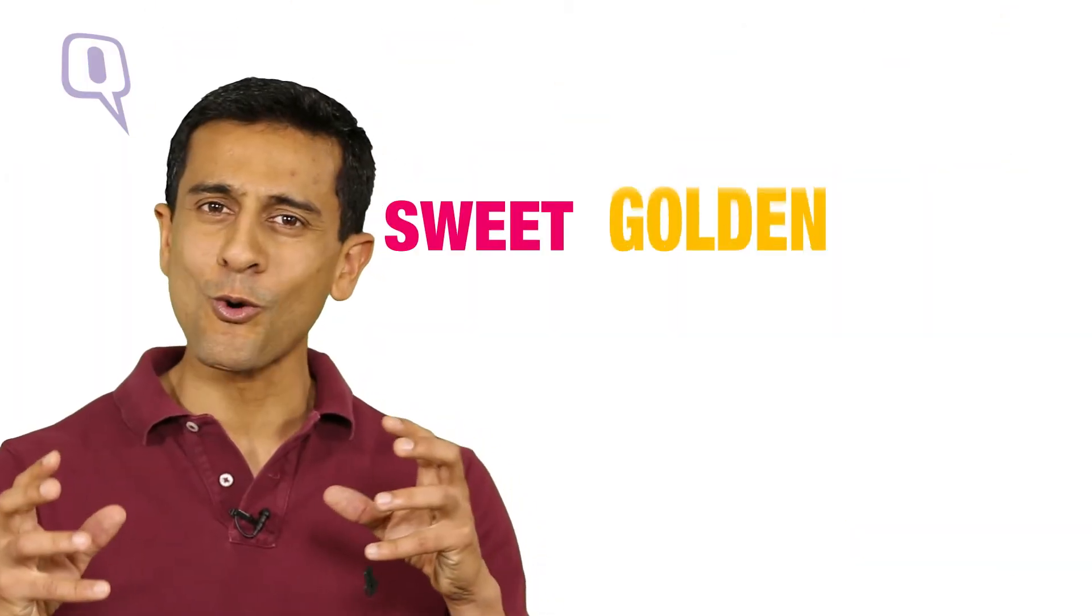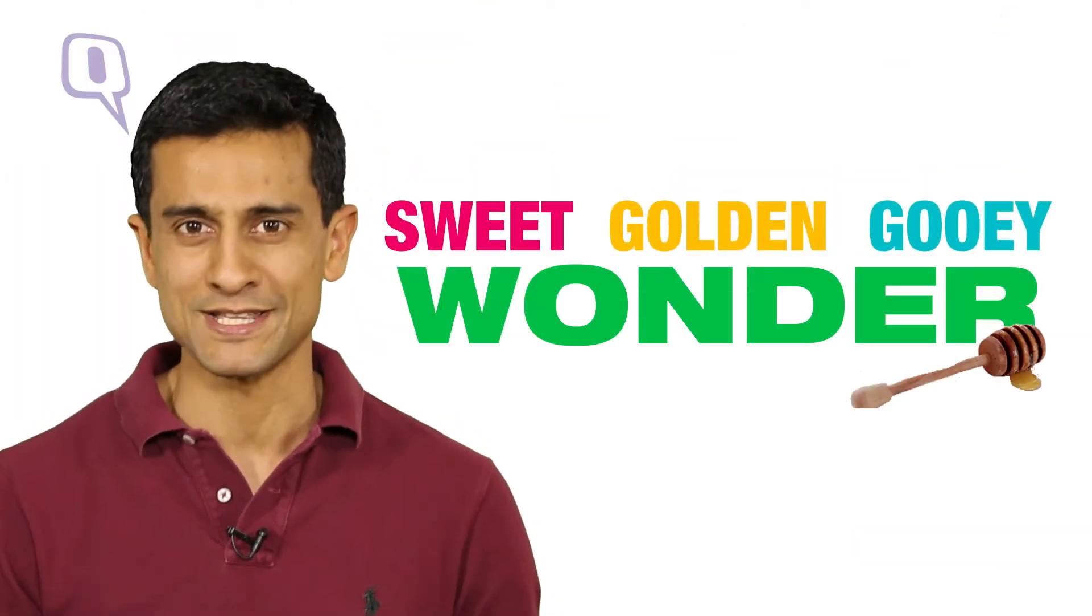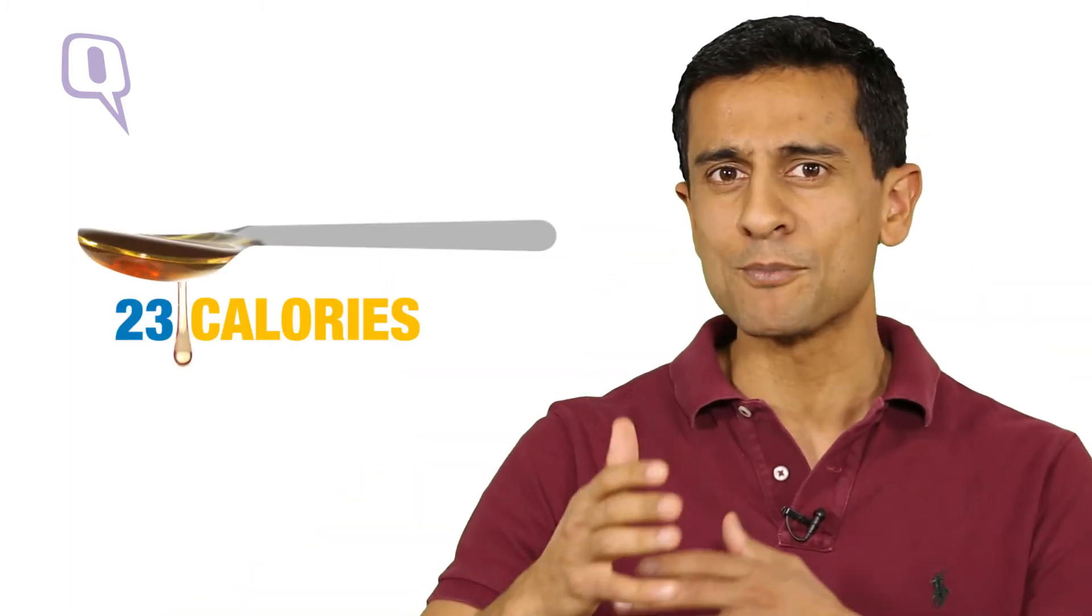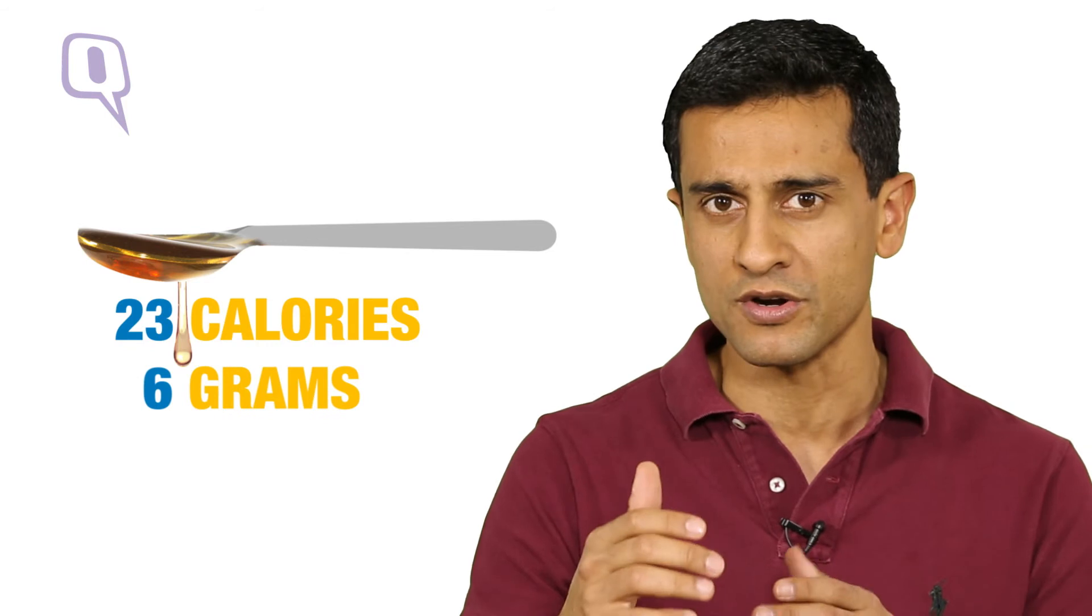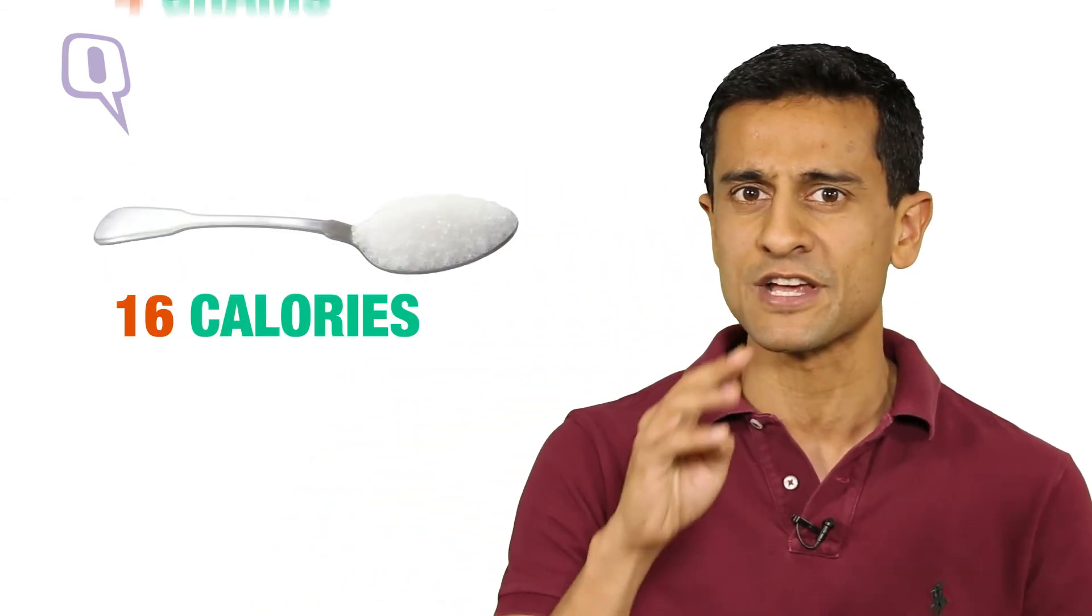Honey, the sweet golden gooey wonder that makes the world a better place. Here's the shocker, when you consume a teaspoon of honey you could be eating up to 23 calories and 6 grams of sugar, whereas a level teaspoon of refined sugar can contain 16 calories and 4 grams of sugar.